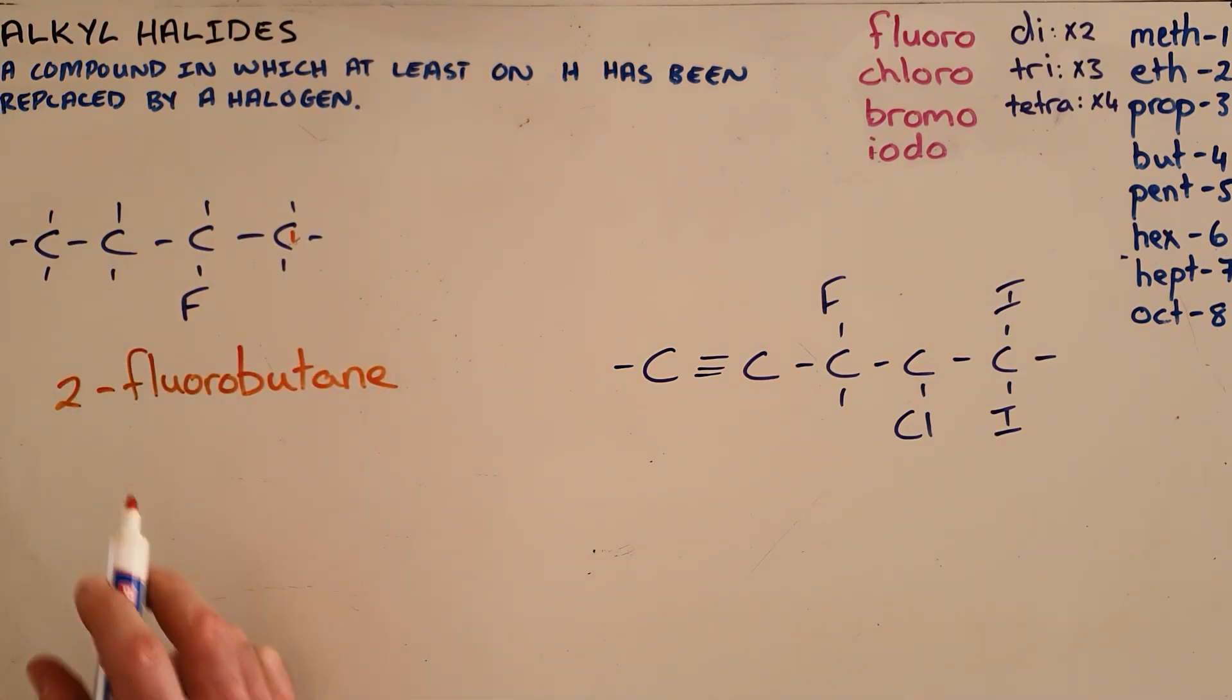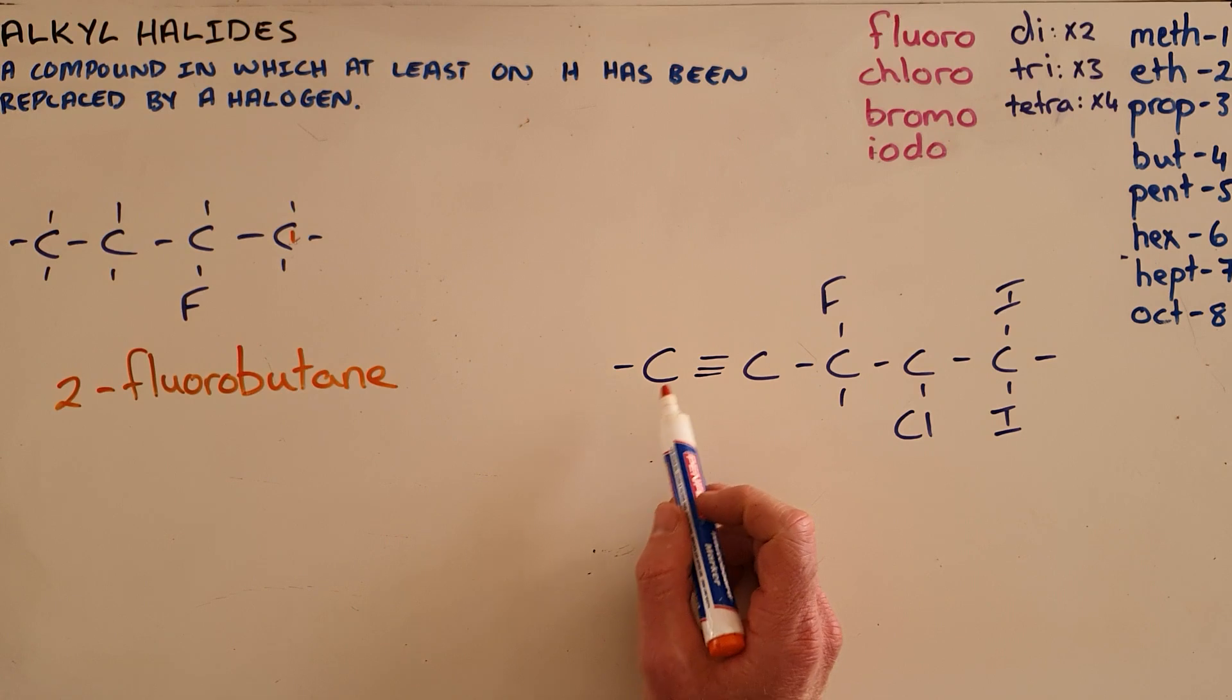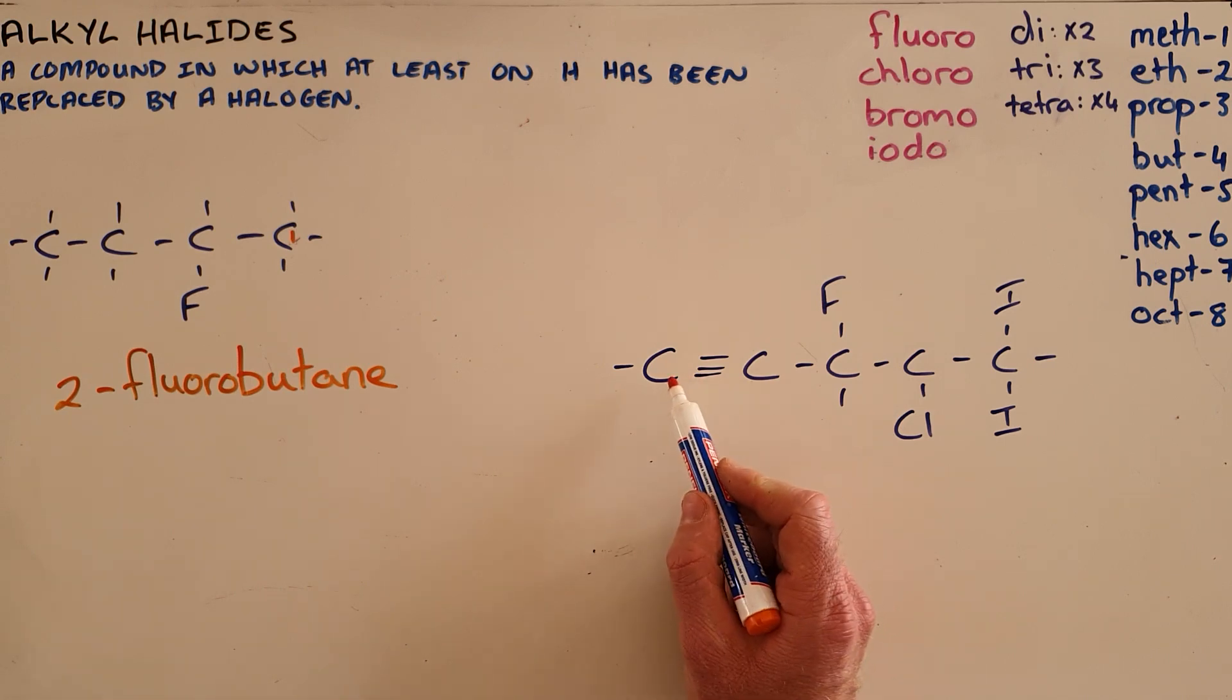This can be applied to any organic compound, including alkynes. Here we can follow the same pattern. This is an alkyne because of this triple bond. The triple bond tells us it gets the suffix '-yne'. We can see that the main chain has five carbons in it.